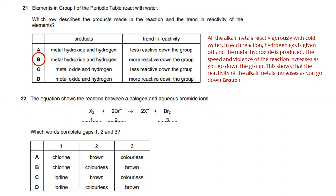The equation shows the reactions between halogens and aqueous bromine ion. Which words complete gaps 1, 2 and 3? Chlorine reacts with bromine to form colorless, brown chlorine. So the answer will be B.